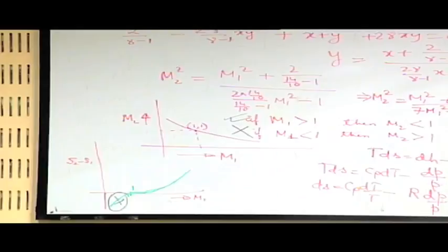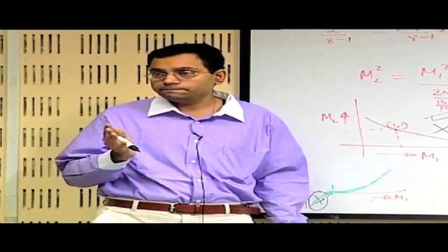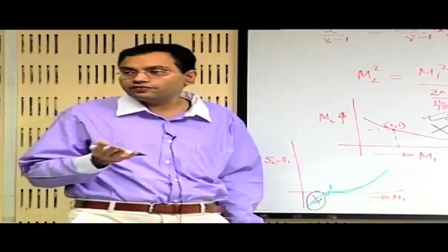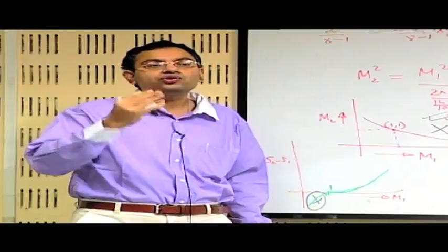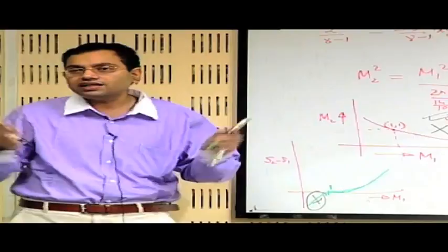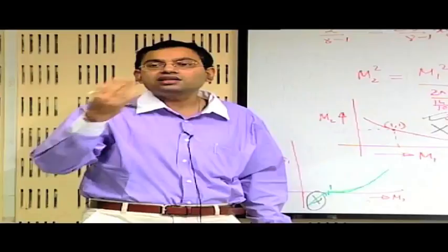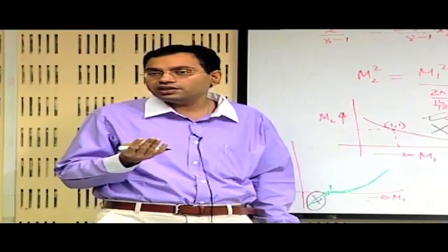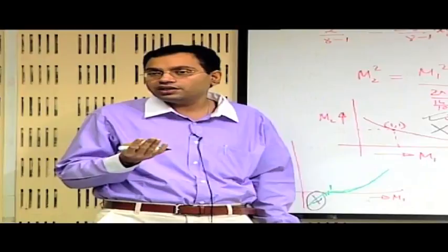We conclude that if a shock exists, the upstream flow must be supersonic and there is an abrupt change from supersonic to subsonic state. Physically, in a supersonic flow disturbances cannot propagate in all directions — they are limited to a zone of action. This causes an accumulation of disturbances, which gets released in the form of a shock with an abrupt discontinuity. The shock is thus a release of accumulated disturbances in supersonic flows.